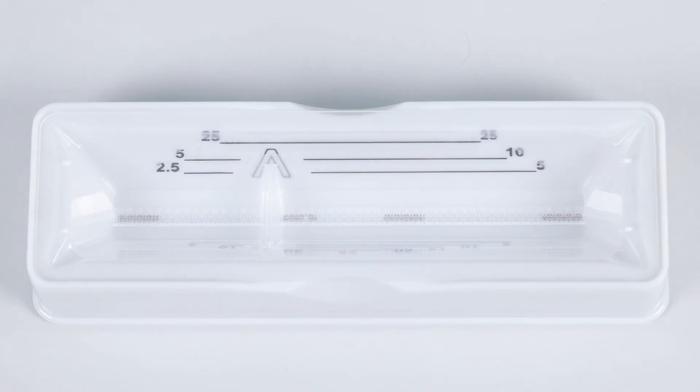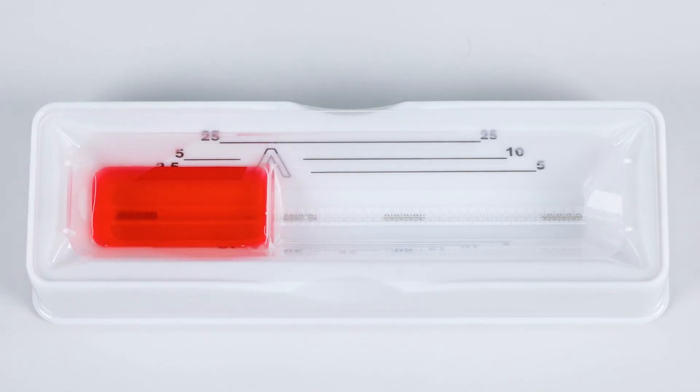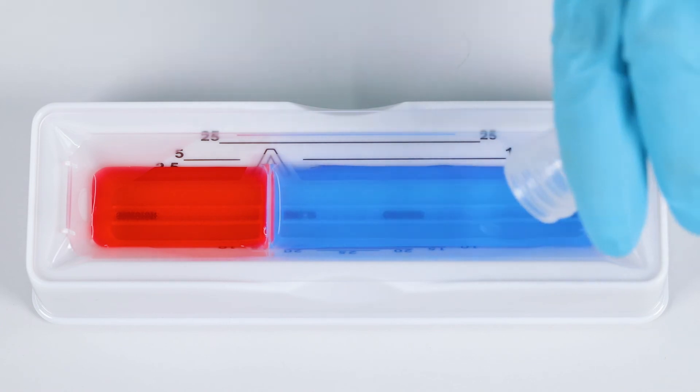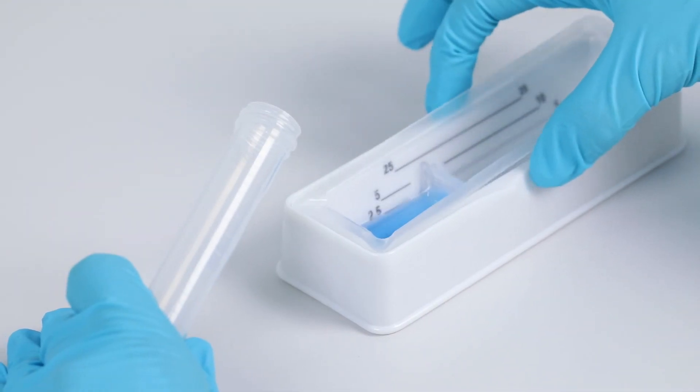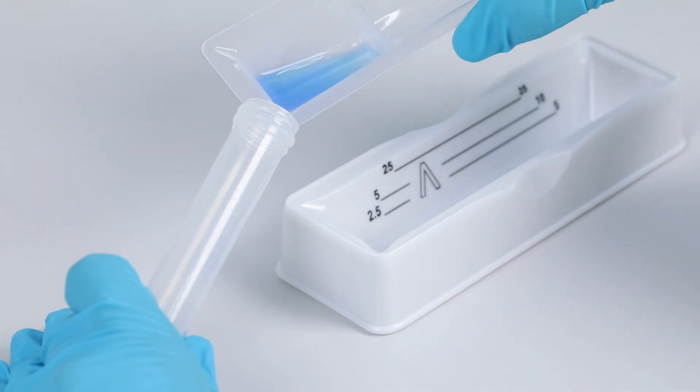The unique design refracts light so graduations below the fluid surface become invisible, making it simple to fill the exact reagent volume desired. Molded into each reservoir corner, pour back spouts precisely control liquid flow and allow you to neatly return excess fluid to a source container, resulting in less wasted reagent.